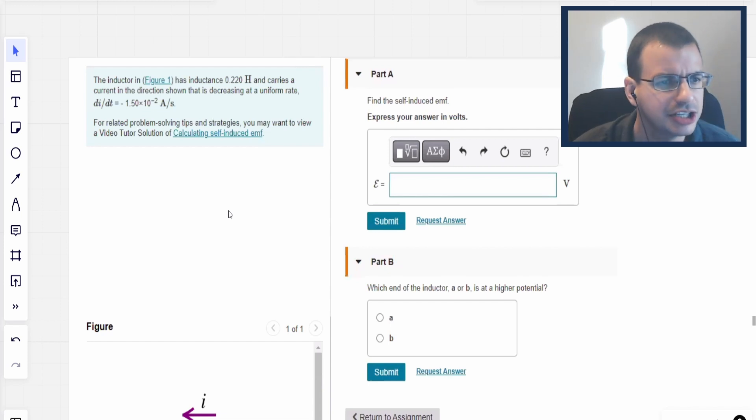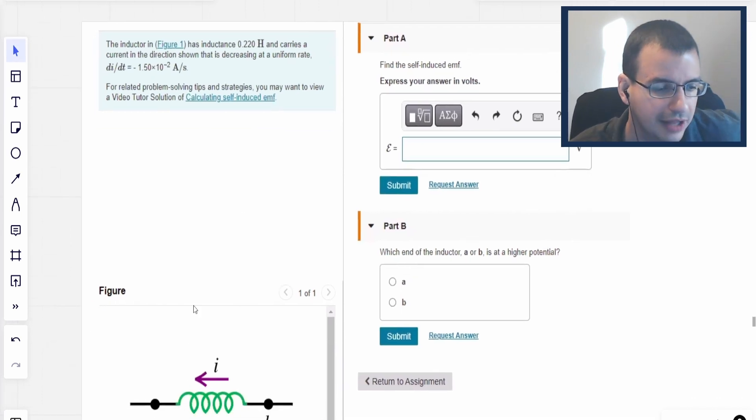The inductor in figure one has an inductance of 0.22 henries and carries a current in the direction shown, right to left, b to a, that is decreasing at a uniform rate of di/dt of negative 1.5. I'm going to assume that the lowering is the negative there, so it's not a double negative, just lowering.